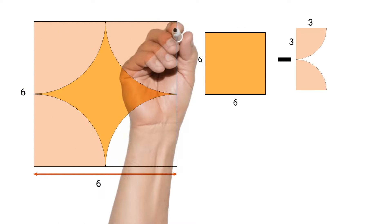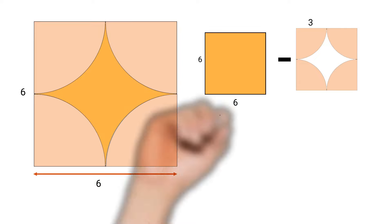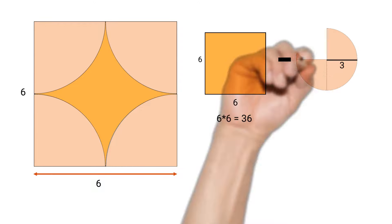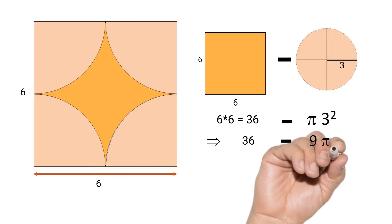The area of the square is obviously 6×6 = 36. And 4 quarter circles mean one full circle of radius 3. So we subtract the area of the full circle, that is πr², and as radius is 3, π(3²) = 9π.